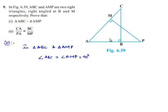And second thing, angle CAB is equal to angle MAP as it is a common angle in both the triangles.